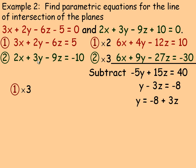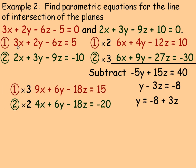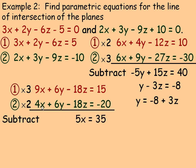The least common multiple of 2 and 3 is 6 again, but now the first equation gets multiplied by 3 and the second by 2, so there's a 6y in each. Subtracting eliminates the y terms. 9x minus 4x is 5x. The z terms happen to be the same, so they subtract to zero — this won't happen very often. 15 minus negative 20 equals 35, and dividing by 5 gives x equals 7.